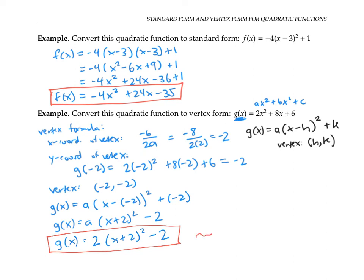If I want to check my answer, of course, I could just distribute out again. I'd get two times x squared plus four x plus four, minus two. In other words, two x squared plus eight x plus six, which checks out to exactly what I started with.